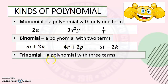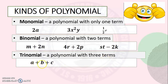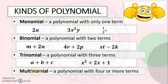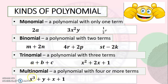Next is trinomial. It is a polynomial with three terms. Examples: a plus b plus c, and x squared plus 2x plus 1. The last kind of polynomial is multinomial. It is a polynomial with four or more terms. Example: x cubed plus y plus x plus 1 — as you can see, this polynomial has four terms: x cubed, y, x, and 1.